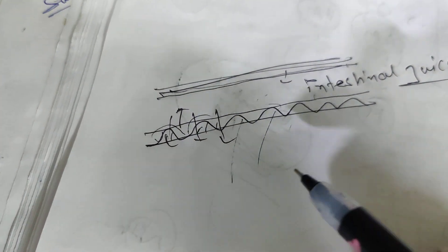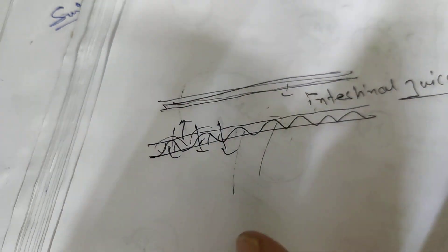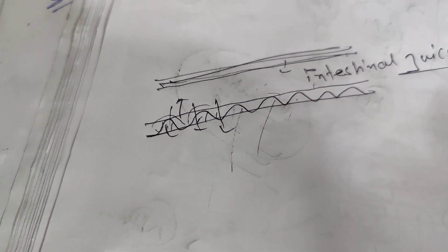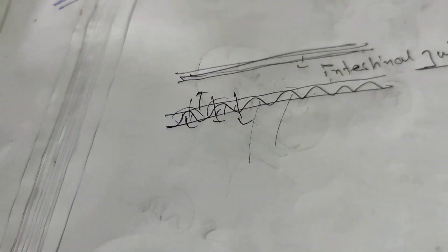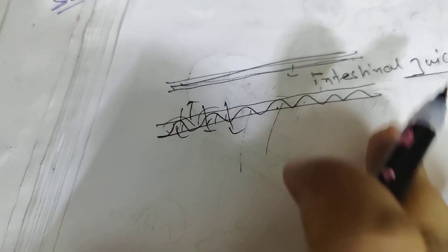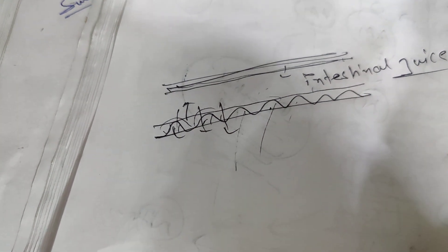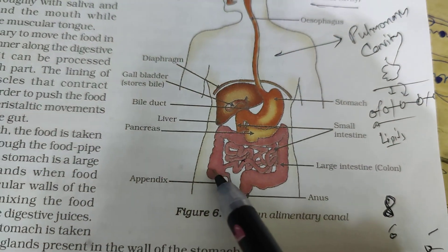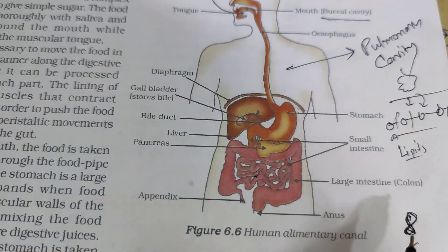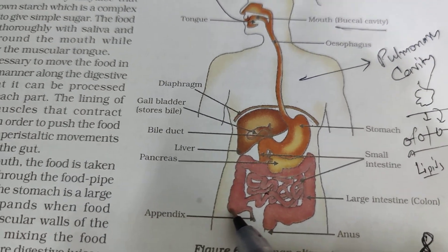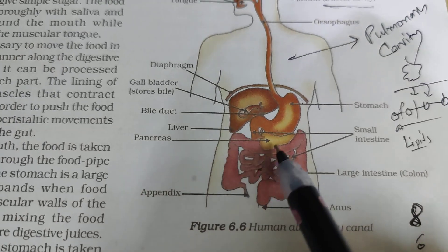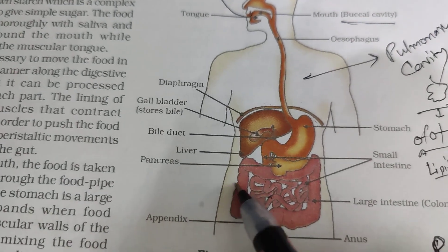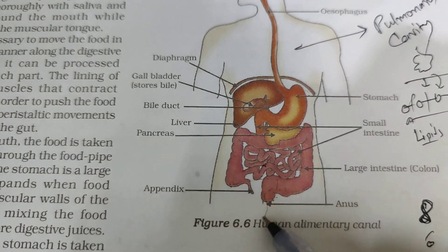After all the food is absorbed — amino acids utilized, glucose utilized, fatty acids and glycerol absorbed in the lacteals (lymph vessels in the villi) — this is known as assimilation. The undigested food passes into the large intestine. In the large intestine, nothing is absorbed except water — water is absorbed in the large intestine.